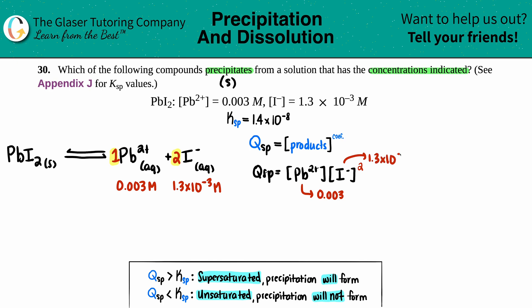Plugging into the calculator: Qsp = 0.003 × (1.3×10⁻³)². Let's calculate this all in one shot. (1.3×10⁻³) squared, then times 0.003 gives us 5.1×10⁻⁹, using two significant figures.